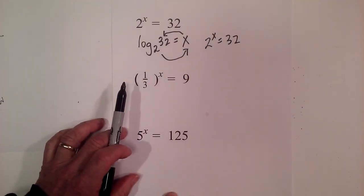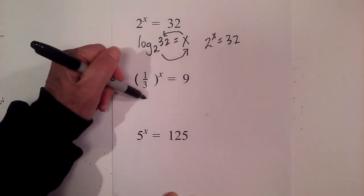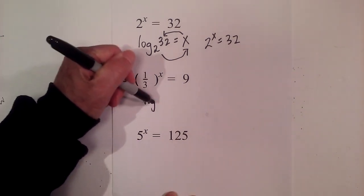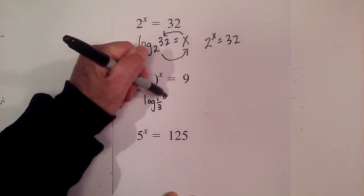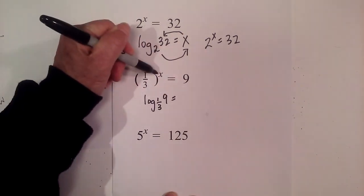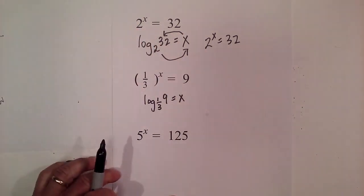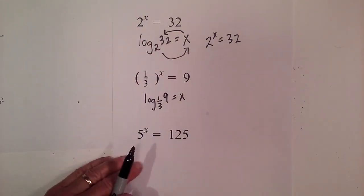So let's try this again. Log base 1/3 of 9 is equal to the exponent, which is x.